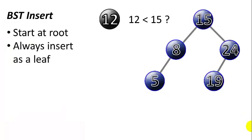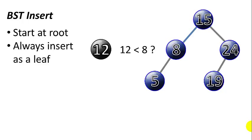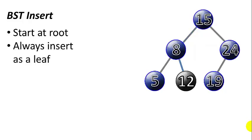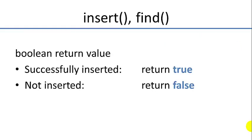Let's review how the binary search tree insert function works. We always start at the root, and we always insert the item as a leaf. So if we want to insert 12 into this tree, our first comparison is: is 12 less than 15? It is. Our next comparison is: is 12 less than 8? No, it's greater than 8. So we insert 12 as 8's right child. For our insert and find functions, we're going to want a return value to confirm whether or not the item was inserted.